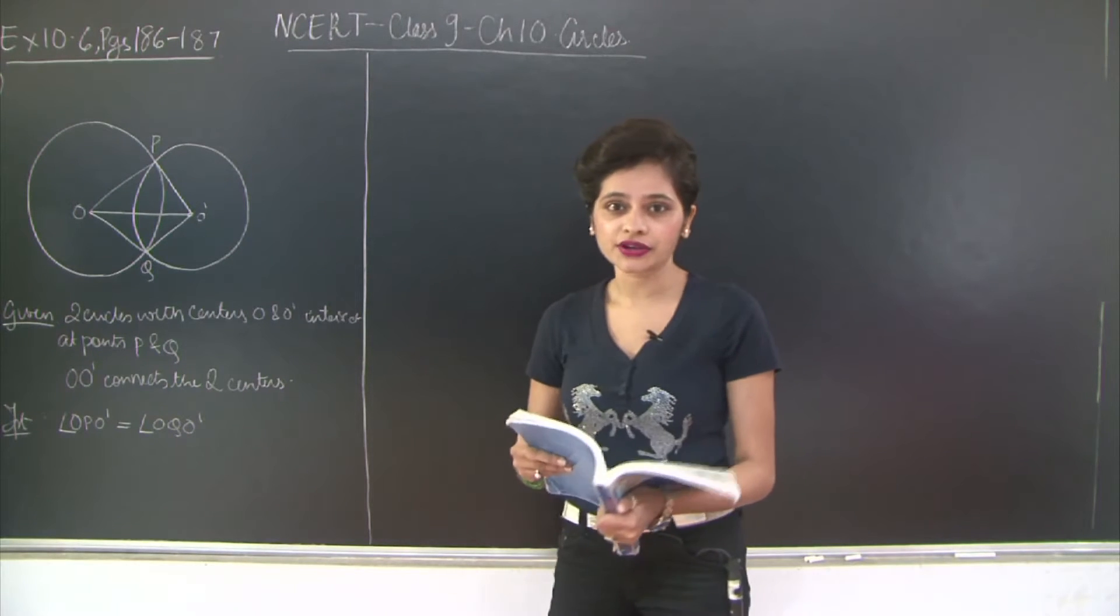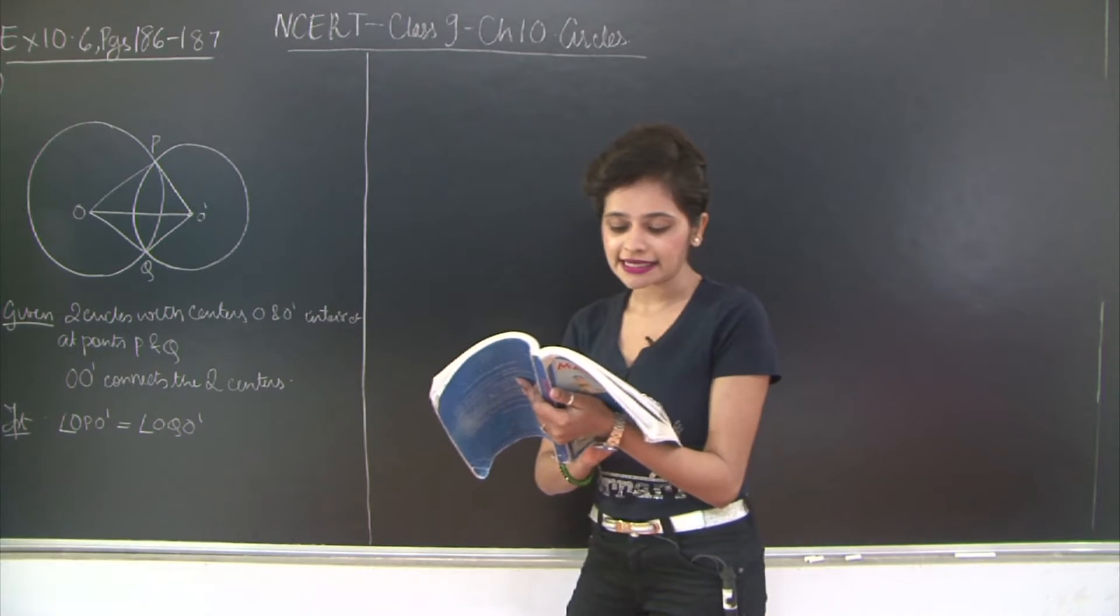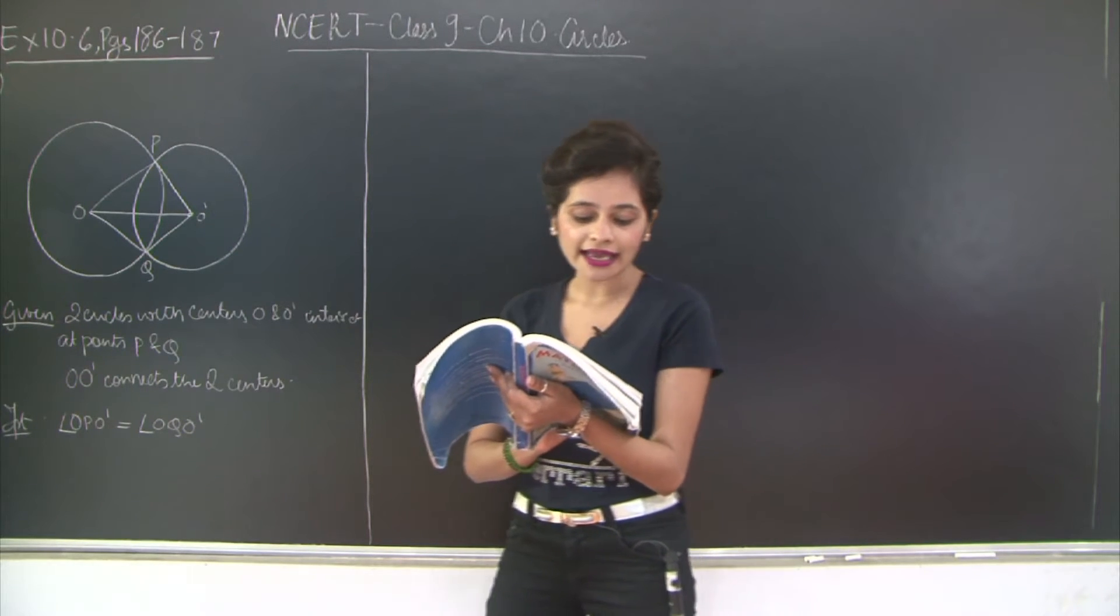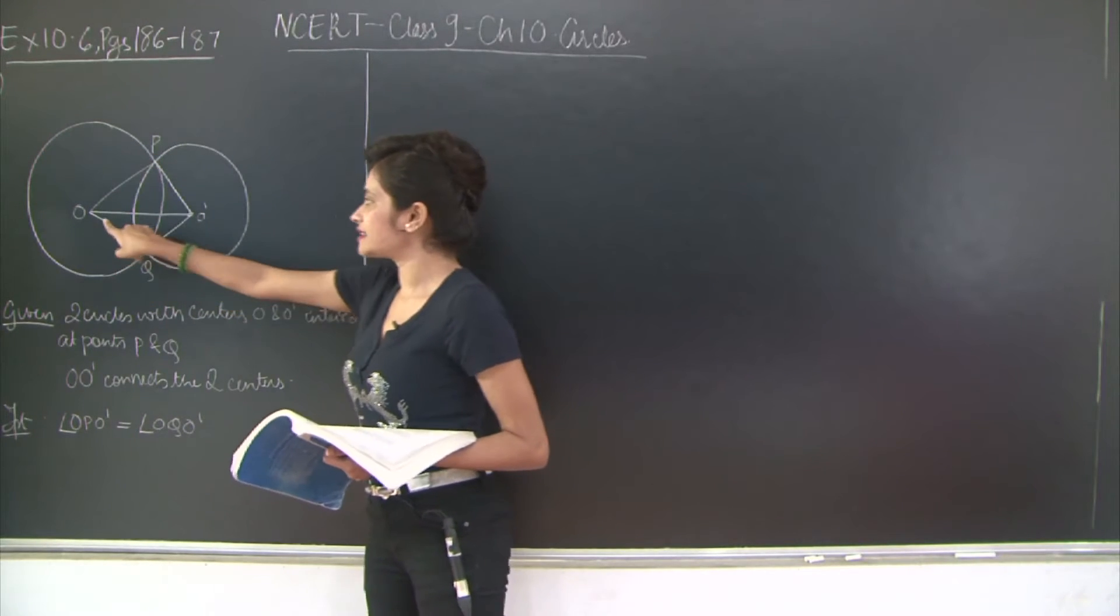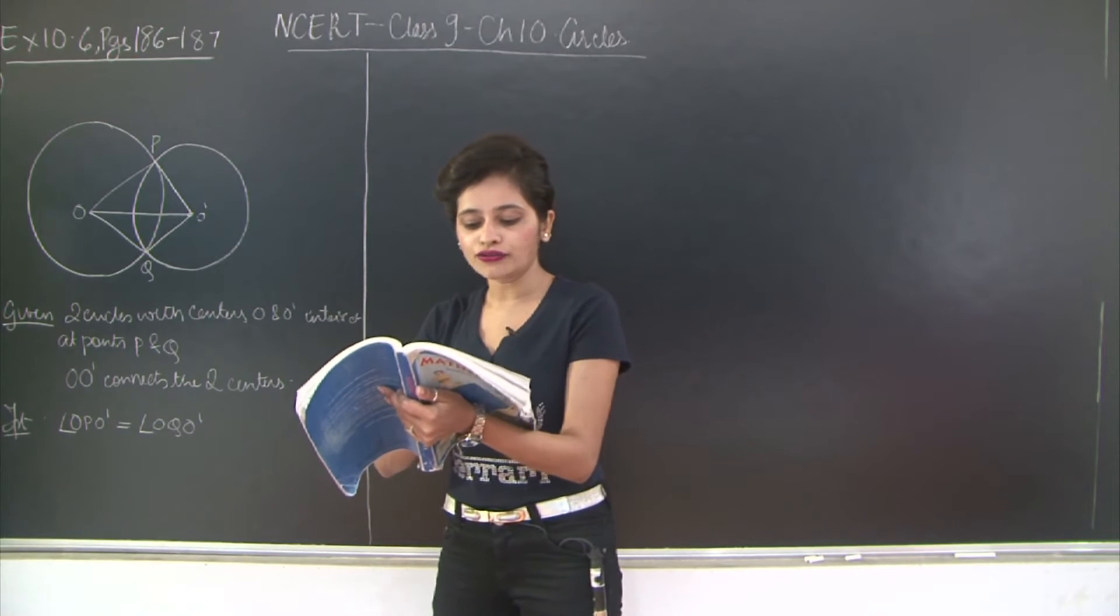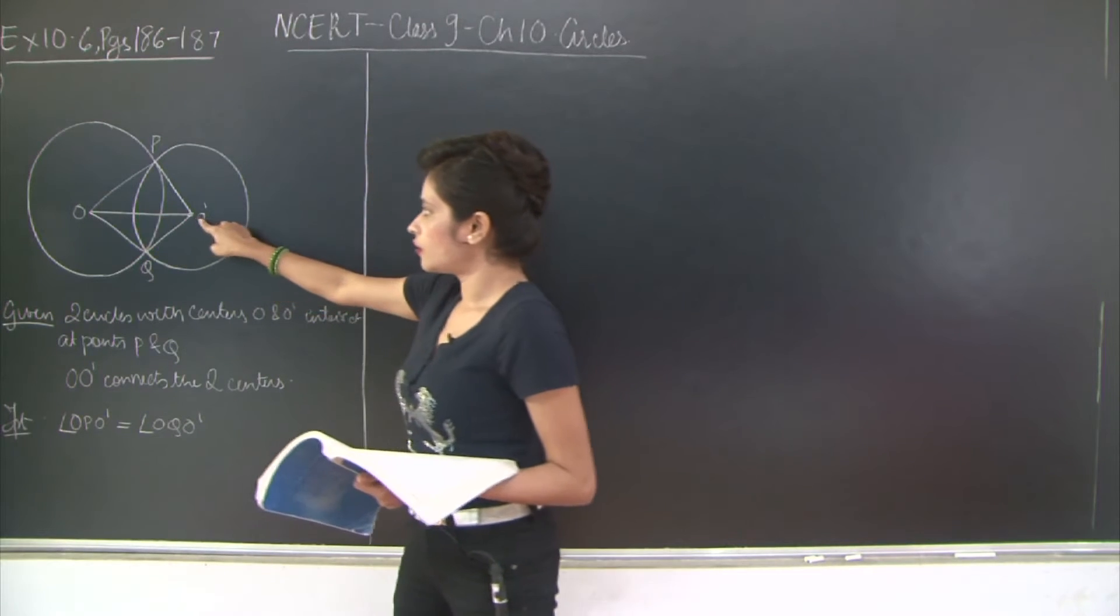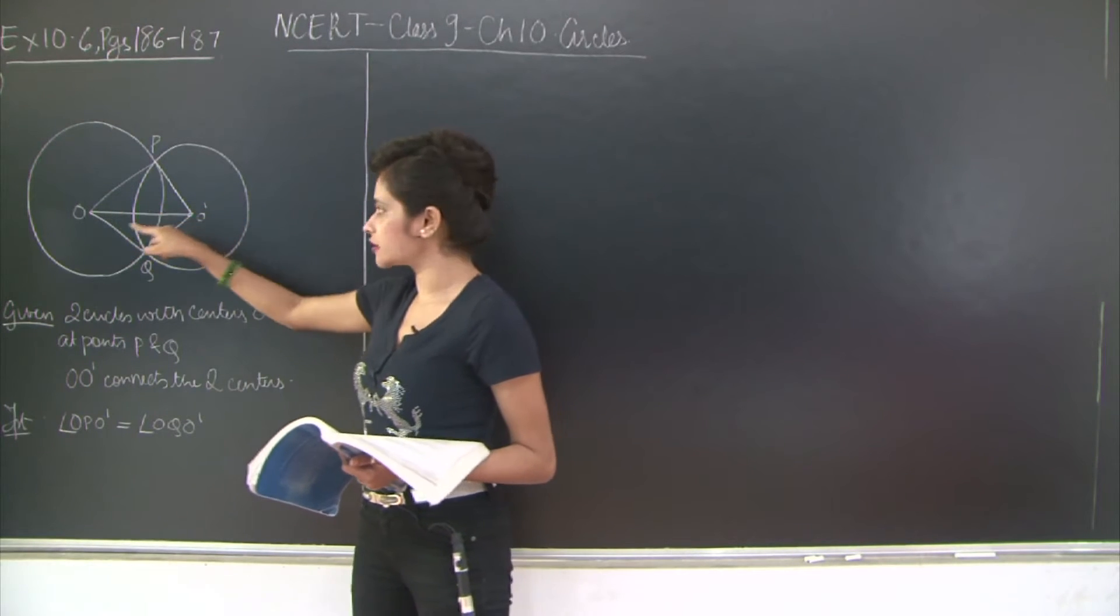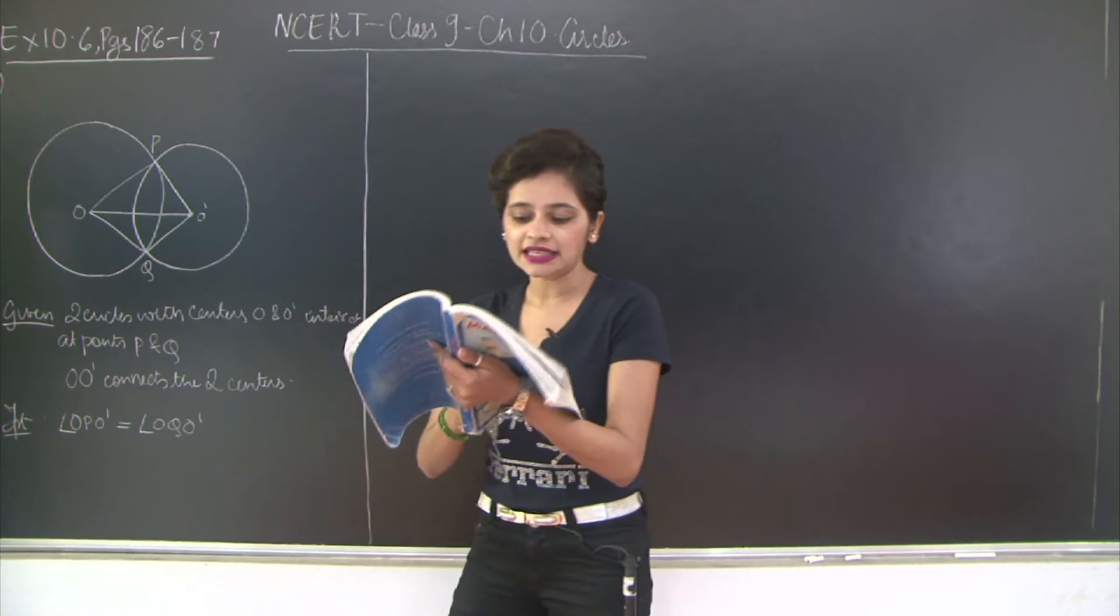So the first question I will read it out for you. Prove that the line of centres of two intersecting circles subtends equal angles at the two points of intersection. So you have two circles having centres O and O' and prove that the line of centres of two intersecting circles. So which line are we referring to? O, O' subtends equal angles.